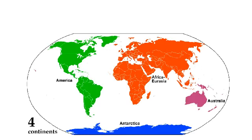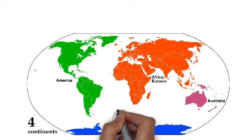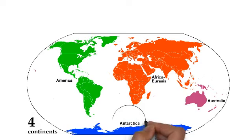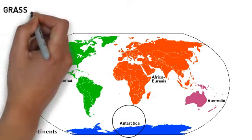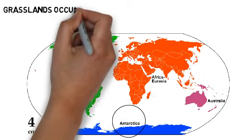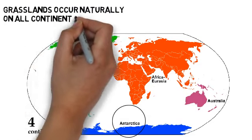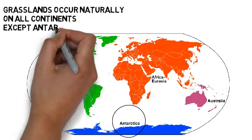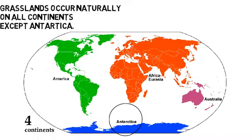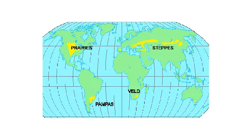Grasslands occur naturally on all continents except Antarctica, and we all know the reason for that. Since it is very very cold, any kind of vegetation to occur over there is very difficult.